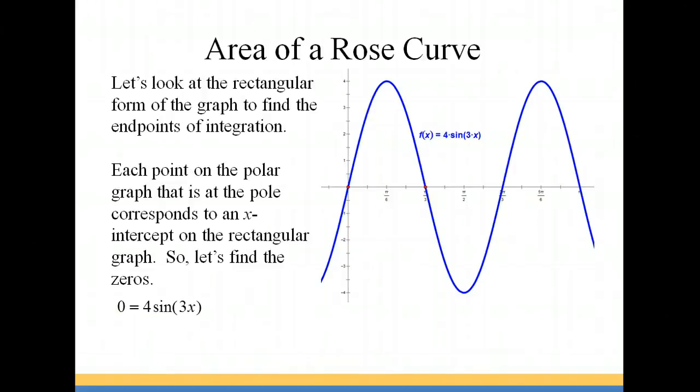We can do that by setting the equation equal to zero and solving for x. So where 4 sine 3x is equal to zero is where the sine of 3x is zero, or where 3x is equal to zero pi, 2 pi, or 3 pi, or so on. Then solving for x, we get zero pi over 3, 2 pi over 3, and pi.